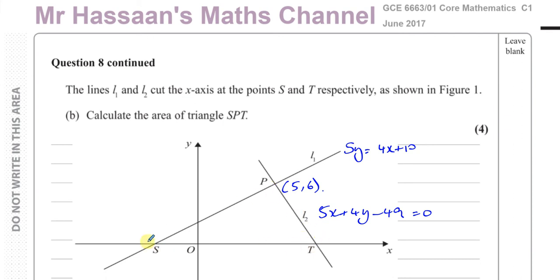So if you look at this triangle here, S, P, T, we can see that this would be the vertical height of the triangle, and this would be the base of the triangle between S and T. So this height of the triangle, the vertical height, would be the y-coordinate of P, which is 6. So this height would equal 6. And the base of the triangle would be the length between S and T.